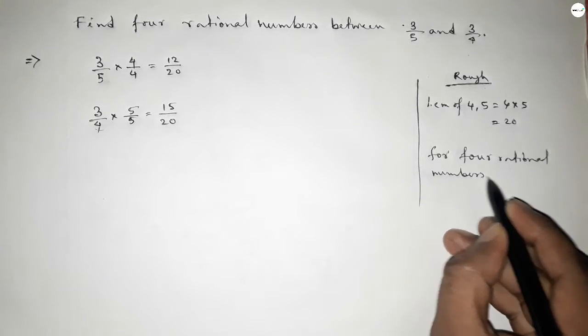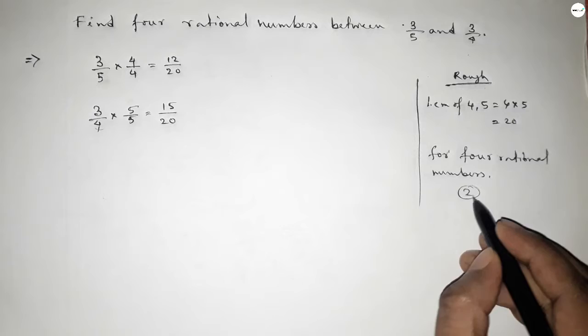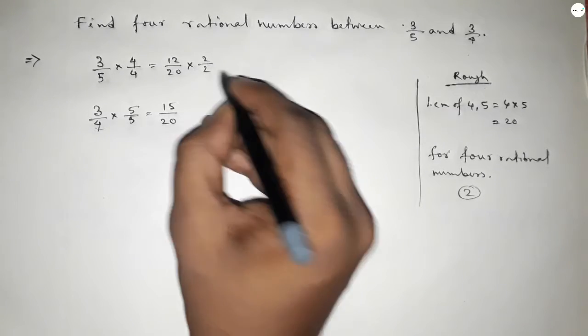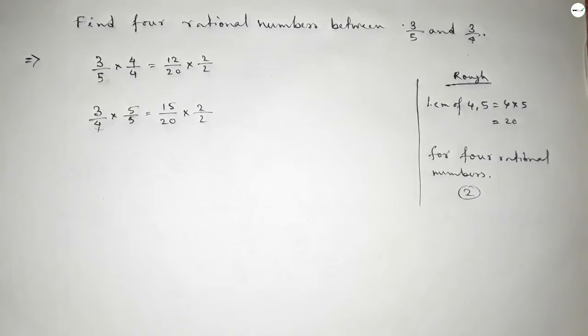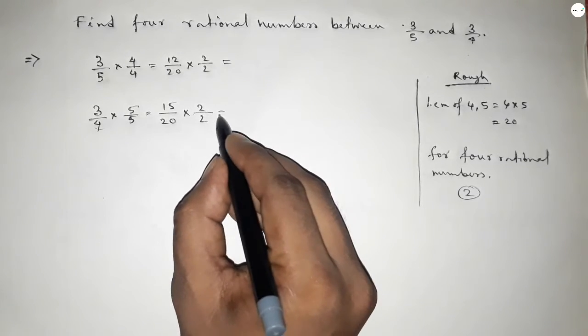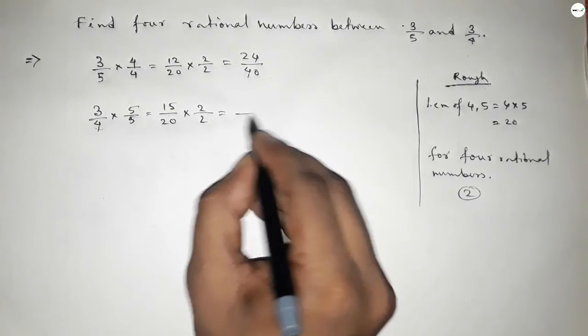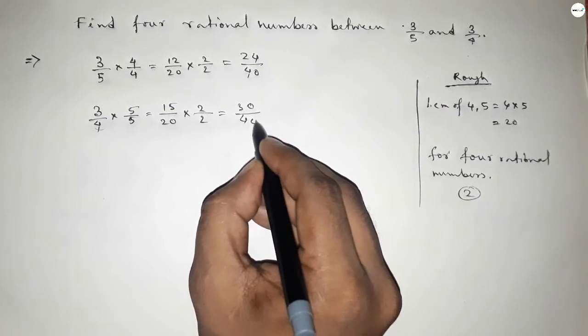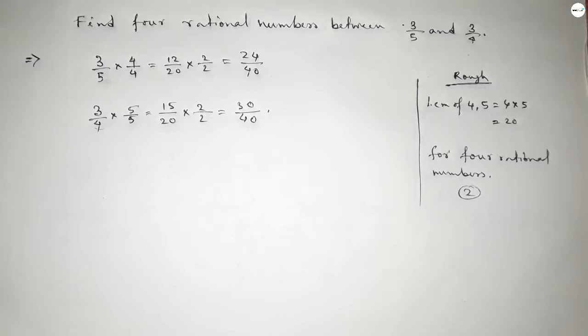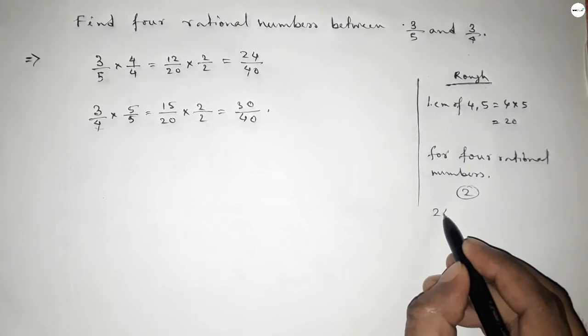For this particular sum we have to follow this method. So we should multiply up and down by 2 with both numbers by 2. So this is 24/40 and this is 30/40.